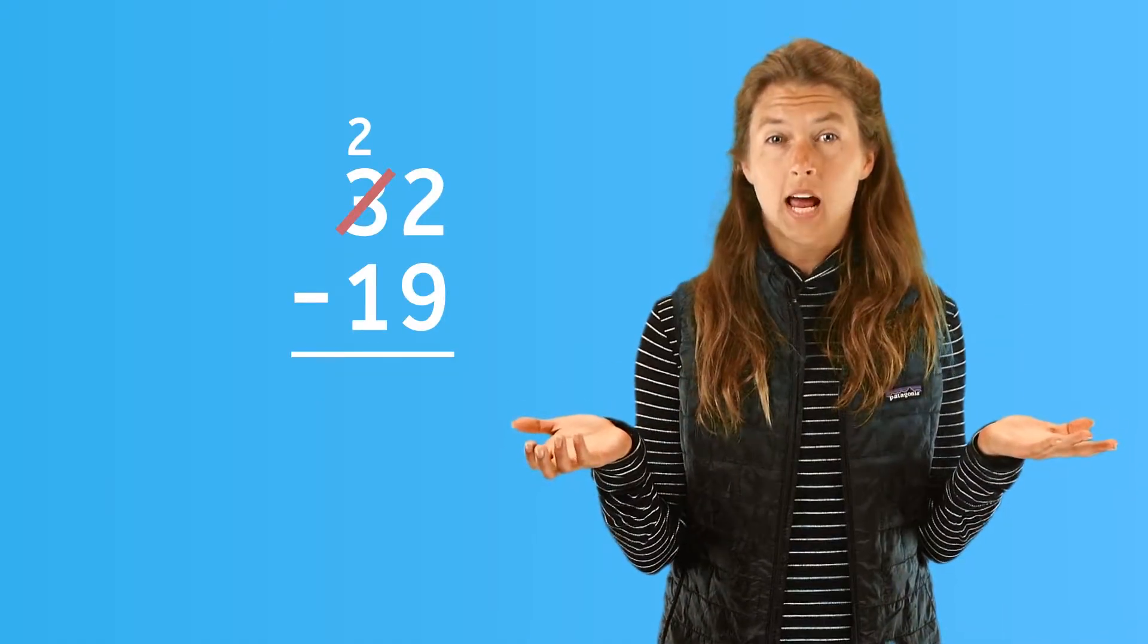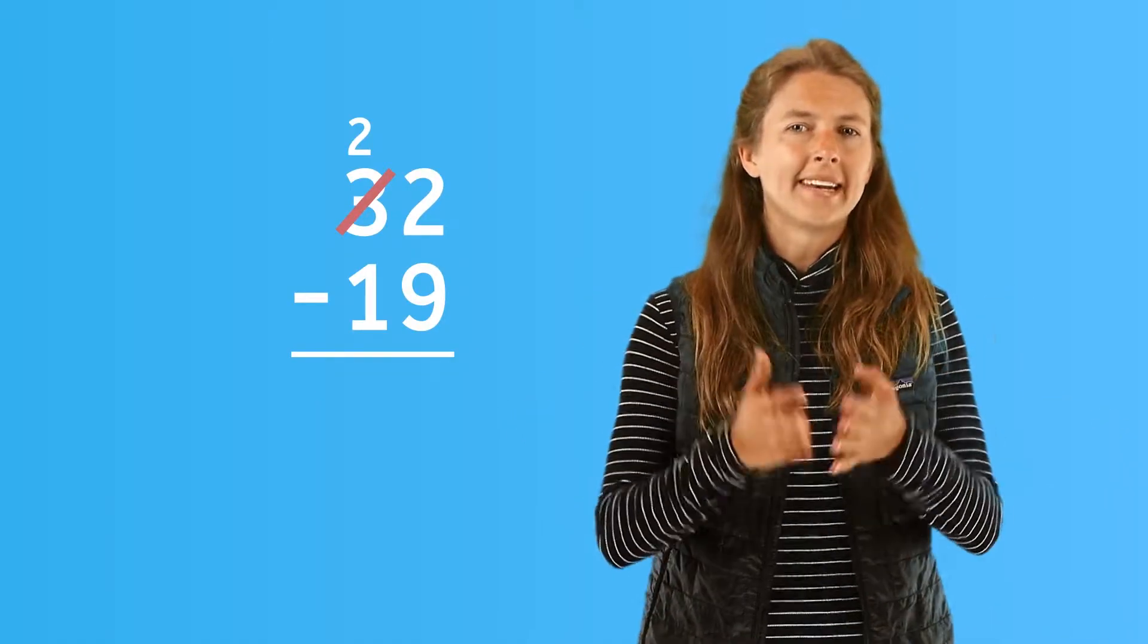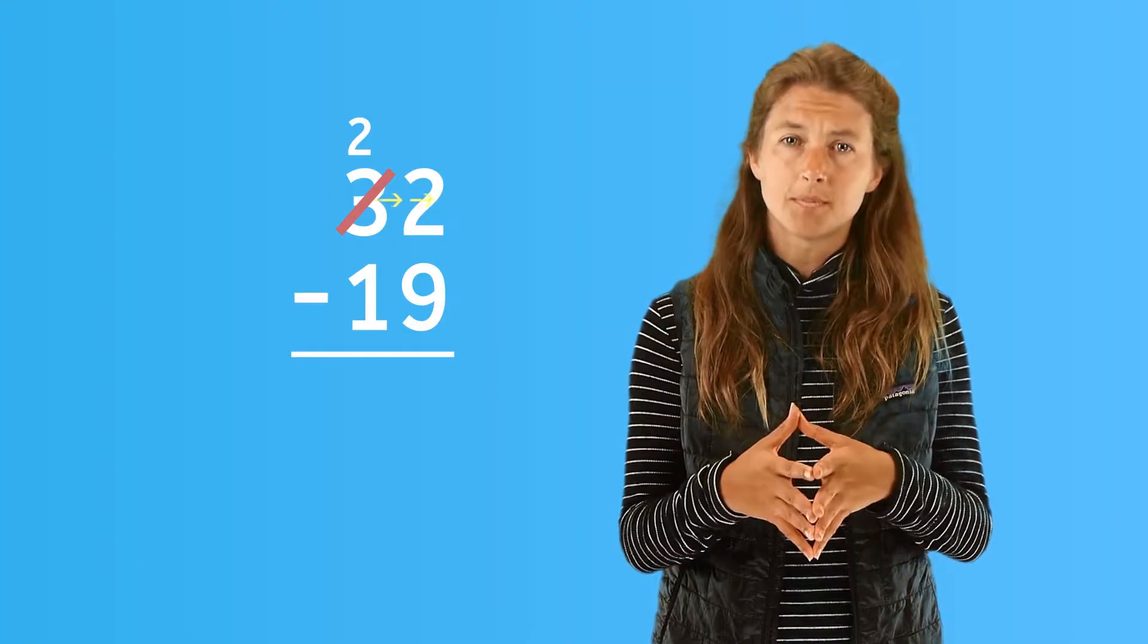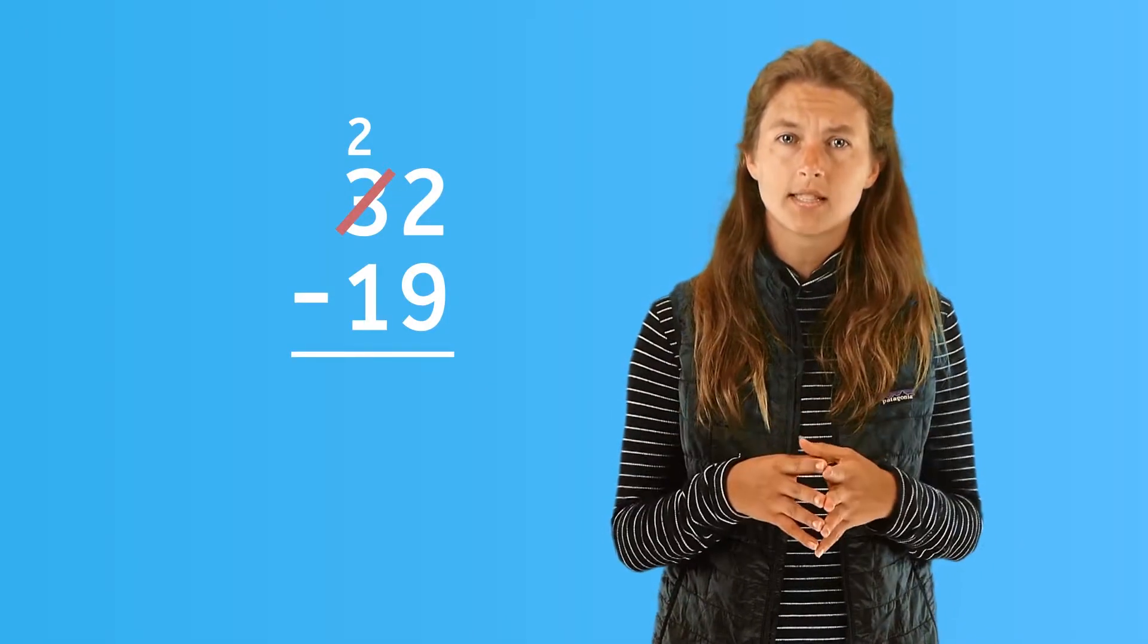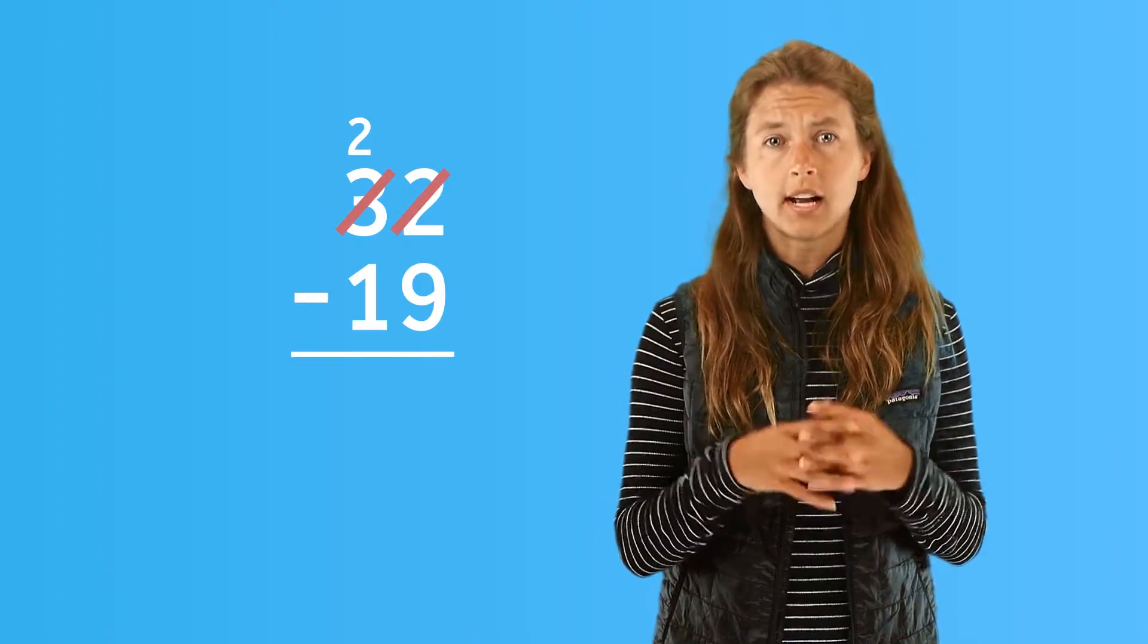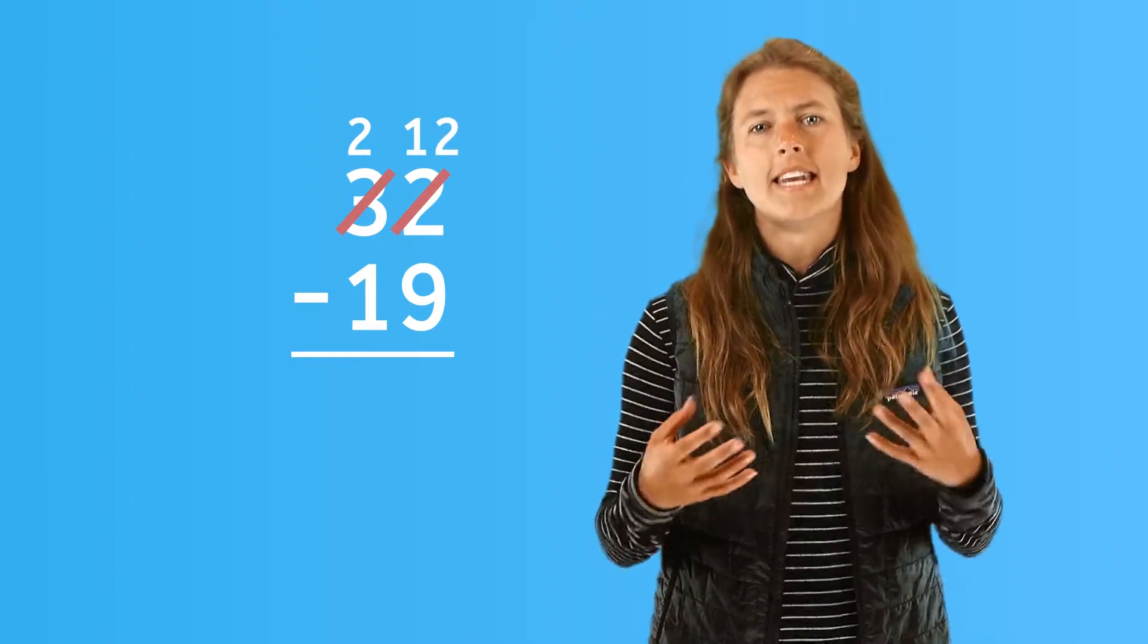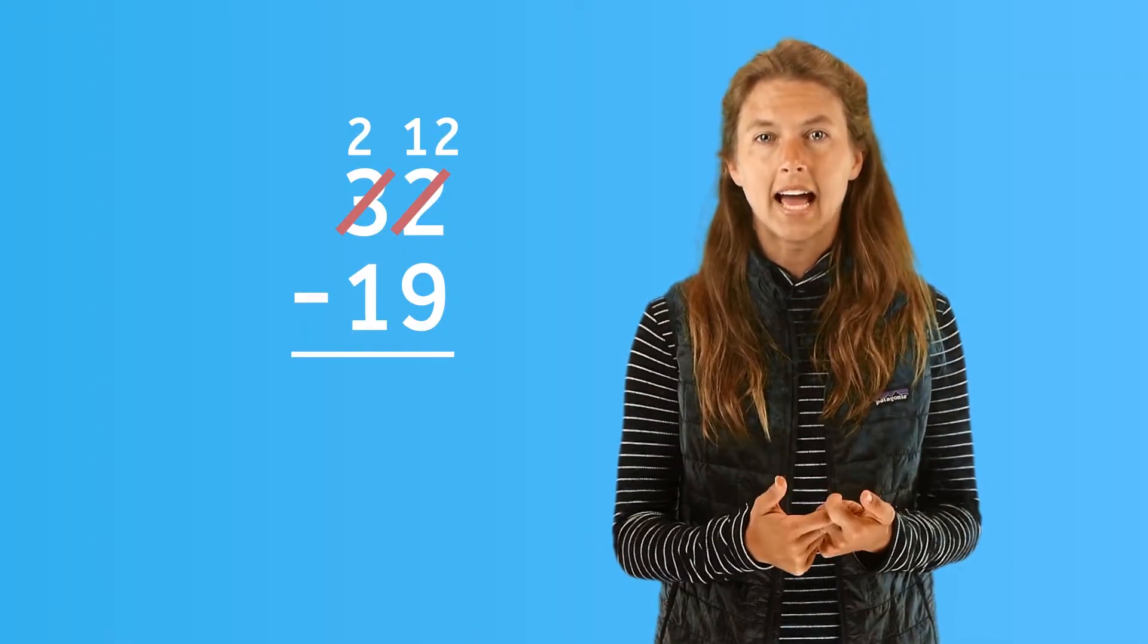Now, where do we put those ten ones? Where we need them, with the two in the ones place. If we add ten ones with two ones, we get twelve ones. Cross out the two and write twelve above it. Now, we can subtract because we've regrouped enough ones in order to subtract the nine.